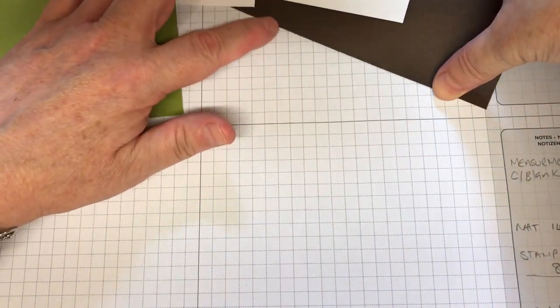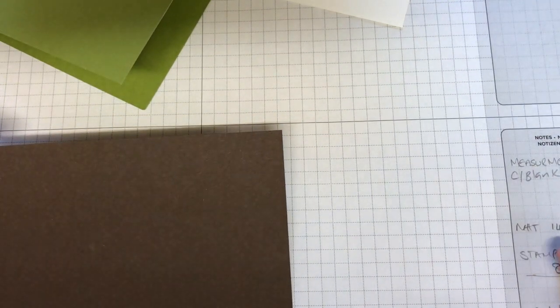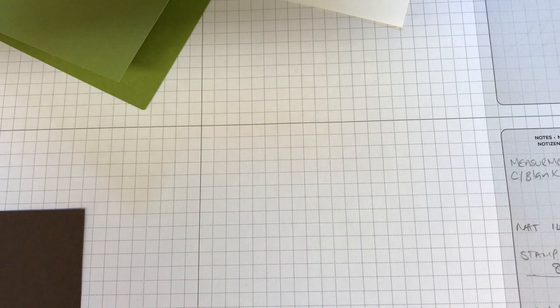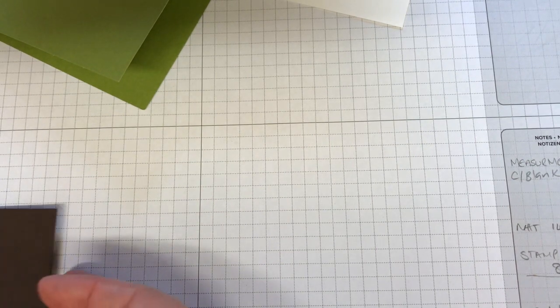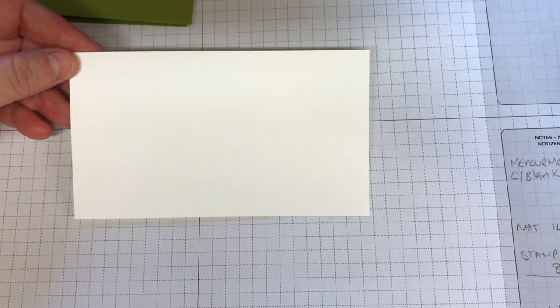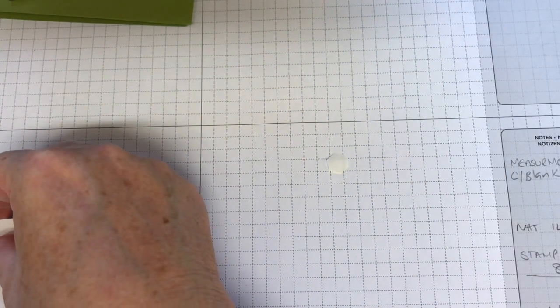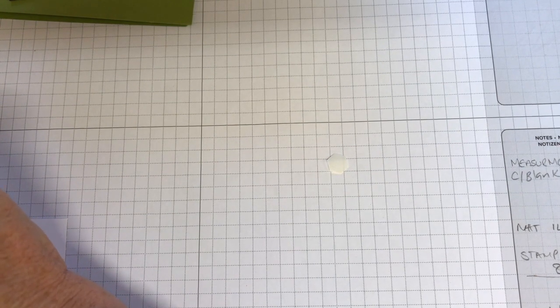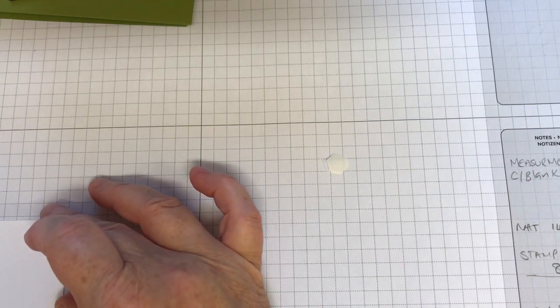Then I've made a mat in the Early Espresso and that's 14.8 cm by 8.5 cm. That's three and three-eighths by five and seven-eighths. And then I cut a piece of Whisper White to do my stamping which is 8 cm by 13.7 cm. That is three and one-eighths, just slightly over, by five and a half inches.